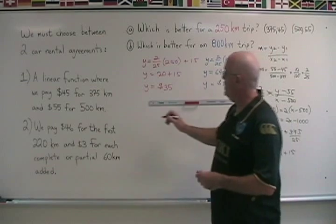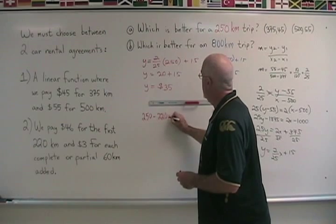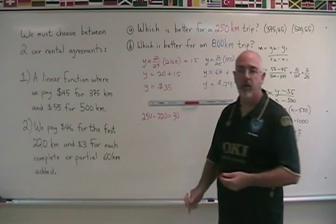In the first trip we have 250 kilometers that we are traveling, so we subtract 220, and we get a difference of 30, 30 extra kilometers.